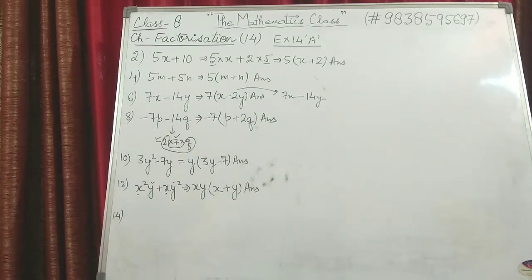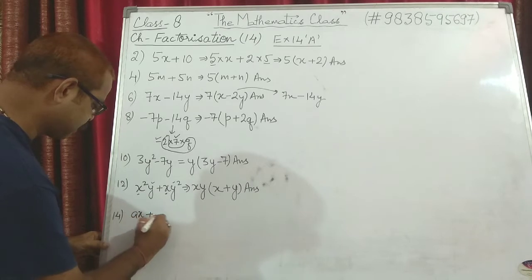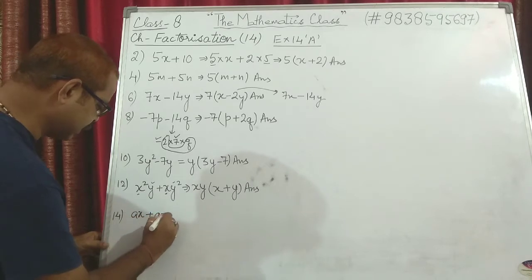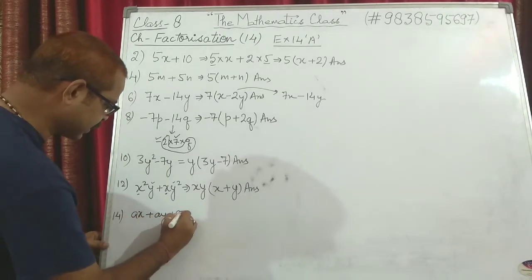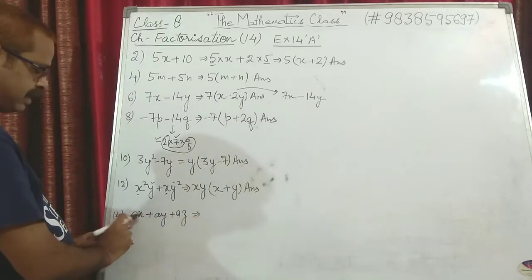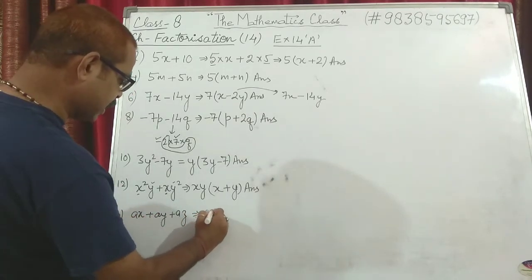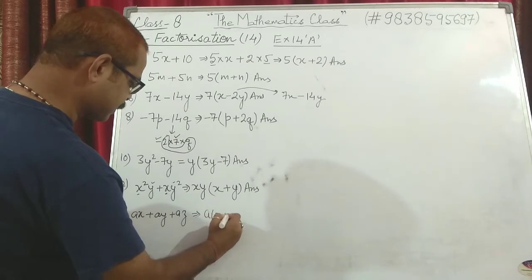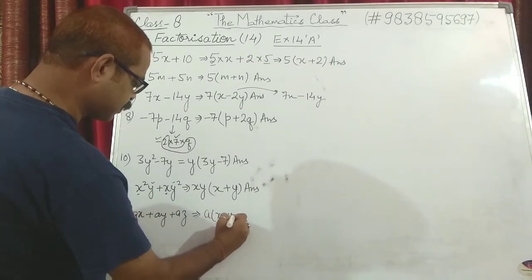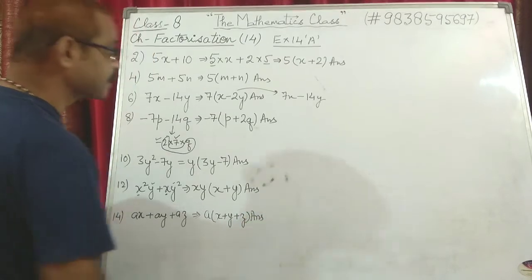Question 14: ax + ay + az. In all three terms, a is common. Take a common and what is left is x + y + z. Answer: a(x + y + z).